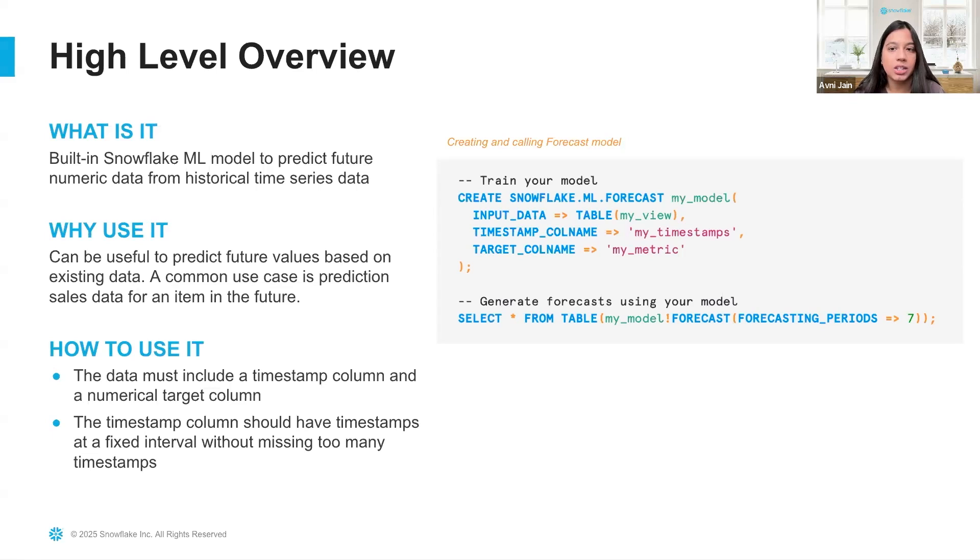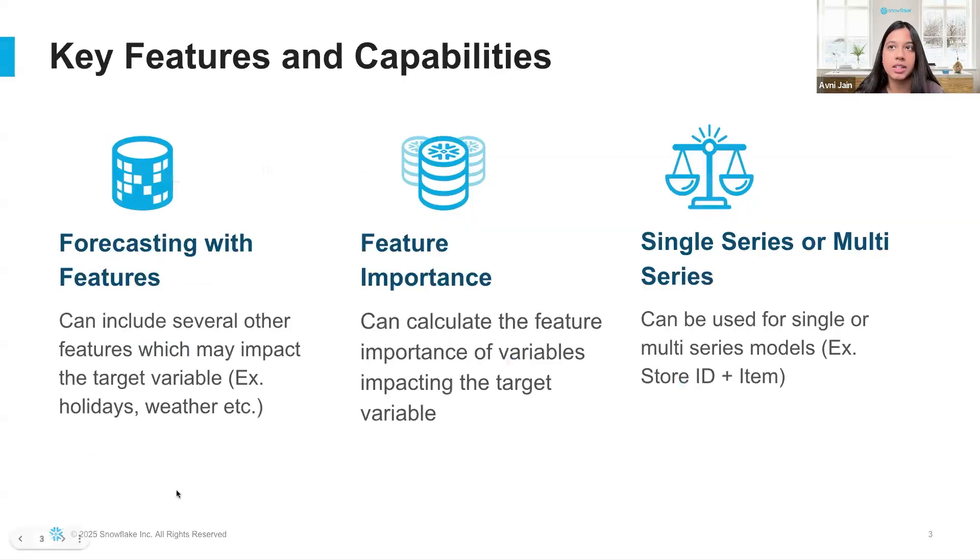Now let's dive a bit deeper into some of the key features and capabilities. First, the forecasting model can include several other variables that may impact the target variable. For example, if you're trying to predict what the sales of an ice cream shop will look like in the next year, some other variables that might be useful to consider are holidays, the weather, etc.